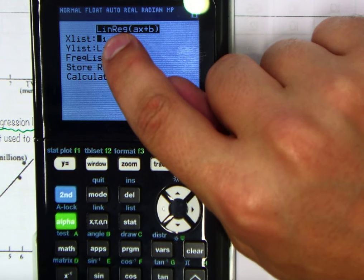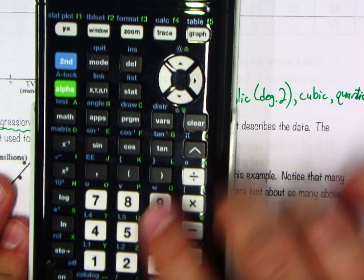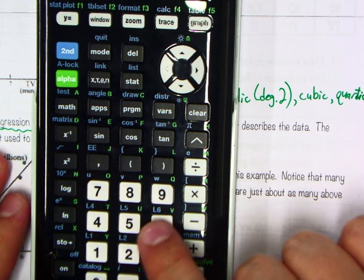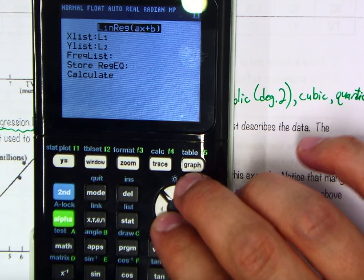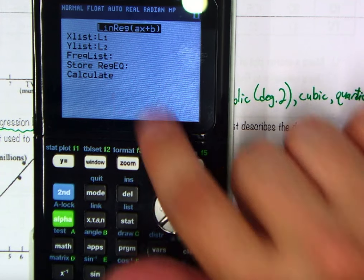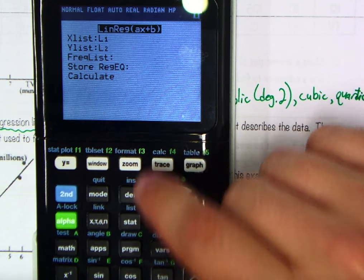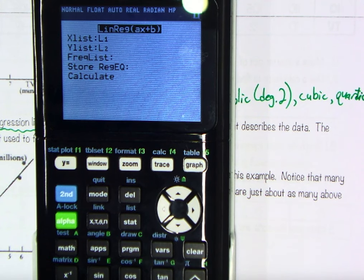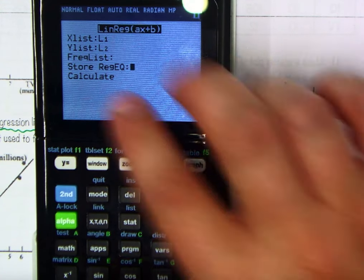We do want our x's to be L1, we want our y's to be L2, and again, if you ever wanted to change those, you could just hit second, like five would be list five, or second six would be list six, so on and so forth. We don't need to worry about a frequency list, that really has to do with more stat options, where you guys would be plugging in, again, lots more data at the same locations, and that way it will weight that input-output pair more heavily for the sake of your regression.